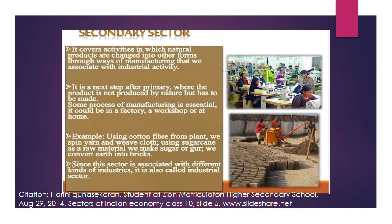The next important sector is the secondary sector. This sector takes the natural product and changes it into a new or manufactured unit — this is known as an industrial or manufacturing activity. Agricultural products cannot be used on their own; we need machinery to convert them into usable products. For example, we cannot use cotton fiber directly — we have to make a shirt or cloth from it. Similarly, sugarcane is converted into sugar. These are secondary activities.